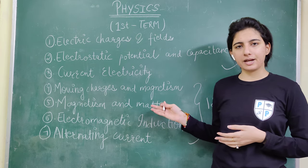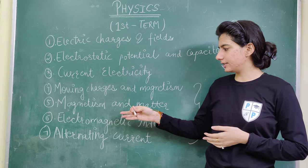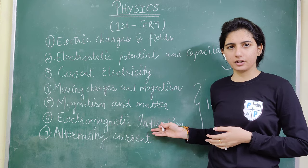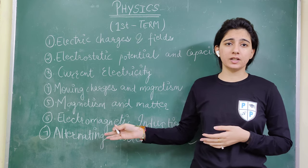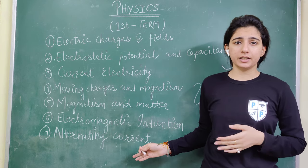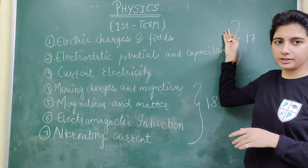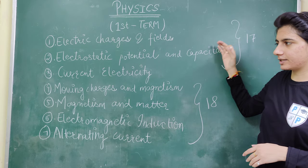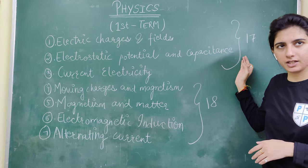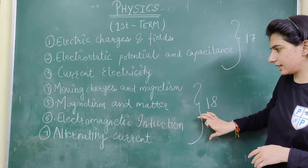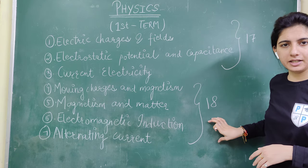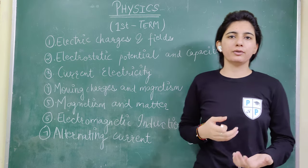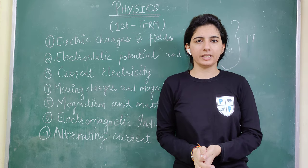The fifth chapter is magnetism and matter, number 6 is electromagnetic induction, and the last one is alternating current. The first 3 chapters carry 17 marks weightage, the next section is 18 marks weightage, making a total of 35 marks, plus 15 marks for practicals.